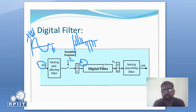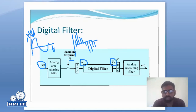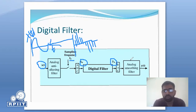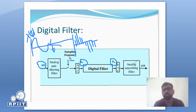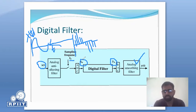The digital signal x(a) is fed into the digital filter, where sampling is done again — this is known as drilling. The signal is converted from x(n) to y(n). This y(n) output is fed to the DAC — digital-to-analog conversion — which converts the signal back to analog. We get y(t) at the output, and we apply an analog smoothing filter to remove any disturbance or noise added in the signal.